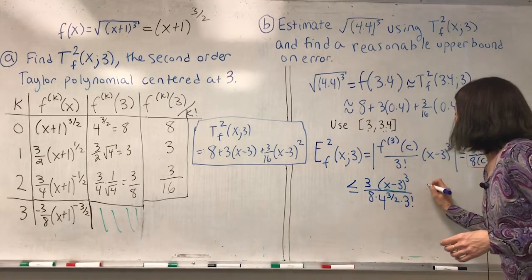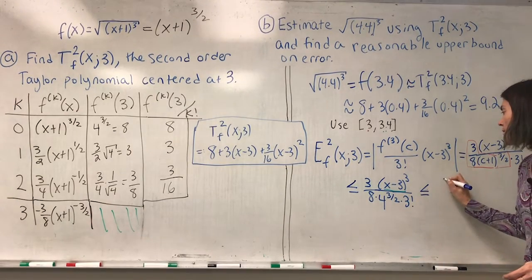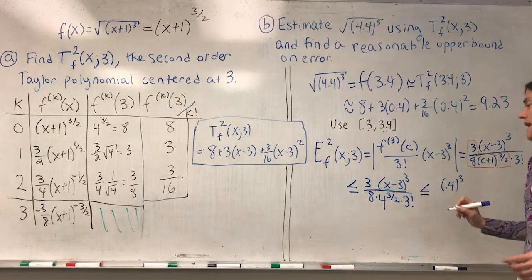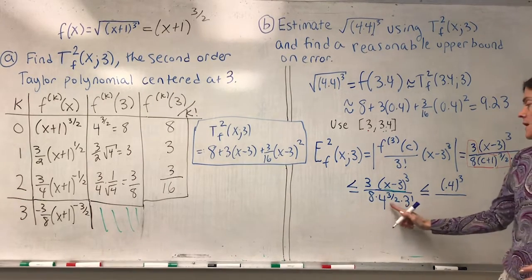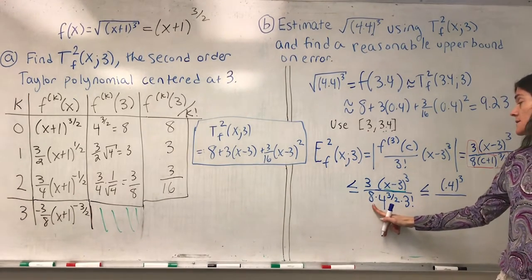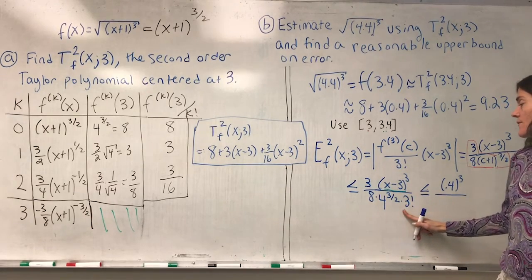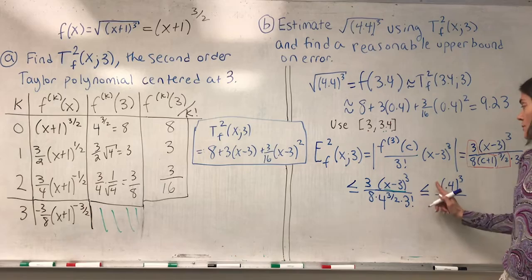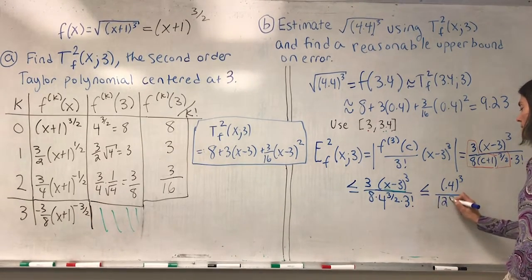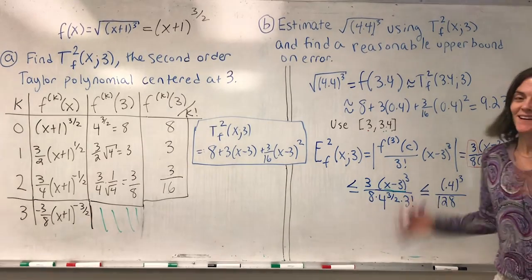So I put another less than or equal to. The numerator, I have 0.4 cubed. And then I can do some things with the denominator. 4 to the 3 halves is 8 times 8, 64. I have a 3, the 3 factorial, it's just going to be a 2. So I can have 64 times 2 or 128. It's just 1 over 128 times this number.